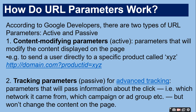An example of a content modifying parameter: to send the user directly to a specific product called XYZ, you use http://domain.com?product_id=xyz. Kisi particular product ko dekhane ke liye usko parameter mein specify karte hain — jaise amazon.com?product_id=computer karne par computer ki information dikhai deti hai.